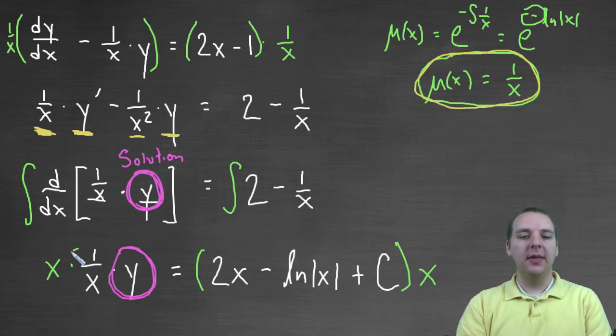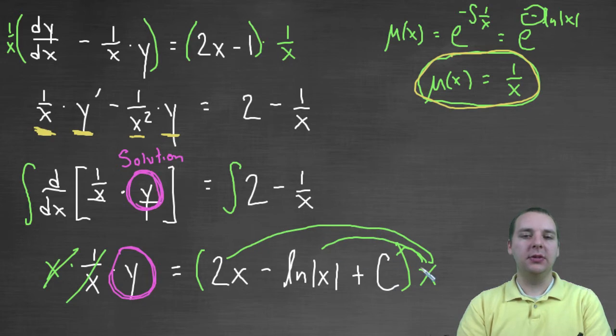Multiply the left side by x, and x and one over x cancel. And then we'll distribute two x squared minus x natural log of x plus cx. We'll just distribute that guy through to all three terms on the right hand side.